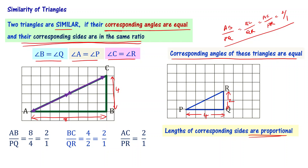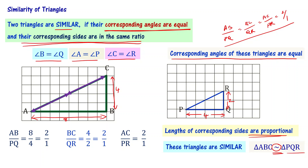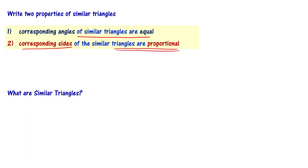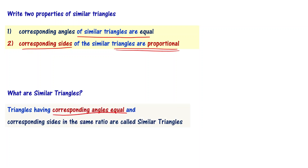Both requirements are met, so triangle ABC and triangle PQR are similar triangles. Triangle ABC is similar to triangle PQR. Now let's answer the questions. Property one: corresponding angles of similar triangles are equal. Property two: corresponding sides of similar triangles are proportional. And to answer what similar triangles are: triangles having corresponding angles equal and corresponding sides in the same ratio are called similar triangles.